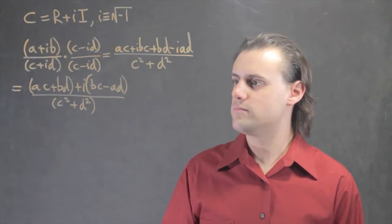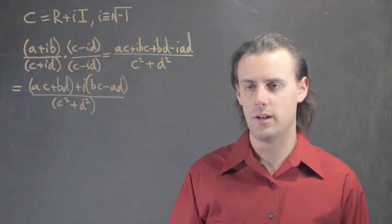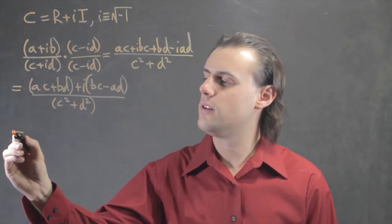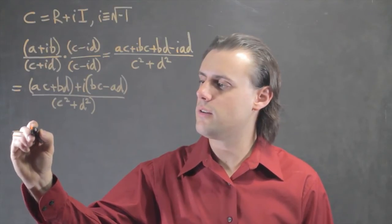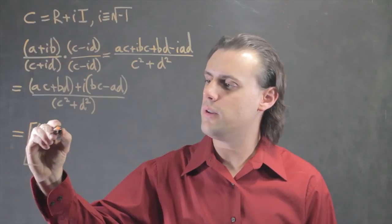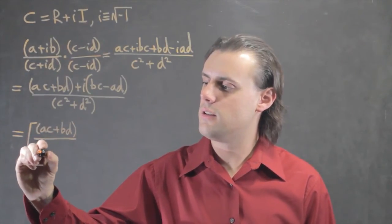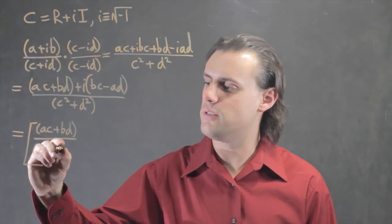Now I can separate this out into just the real and imaginary parts. For the real part, I'm going to have ac plus bd divided by c squared plus d squared.